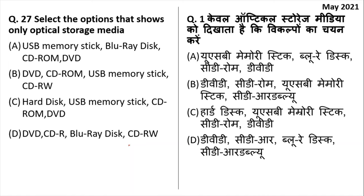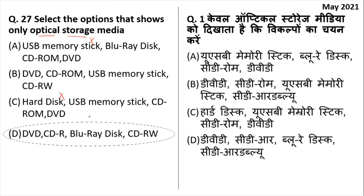Select the option that includes only optical storage media. Optical storage media uses light to write data. DVD, CDR (CD-recordable), Blu-ray disc, and CD read-write are all optical storage media. USB is not optical storage media. Any option containing a hard disk is also incorrect, as hard disk is not optical storage media.